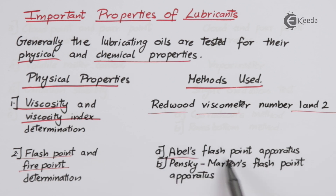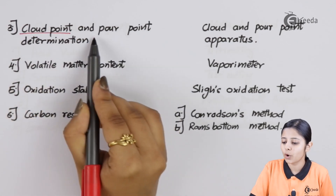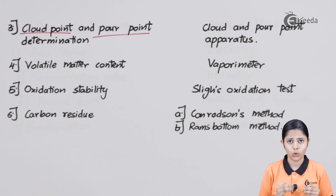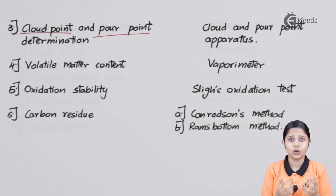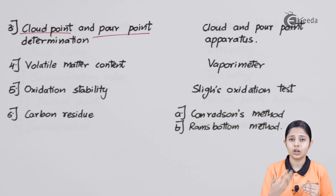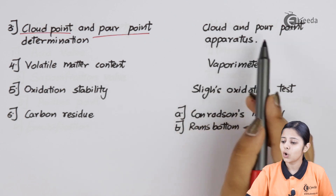Flash point is checked by two methods: Abel's flask point apparatus and Pensky-Martens flash point apparatus. If the flash point is greater than the operating temperature we do not have to worry, but if it is near or below the operating temperature we should not use that lubricant. The third physical property is cloud point, also known as pour point — the temperatures at which wax present in the oil gives a cloudy or hazy effect. This is not desirable and is measured with the cloud or pour point apparatus.